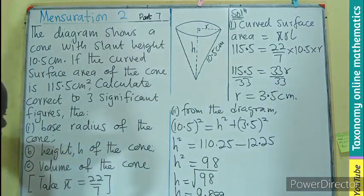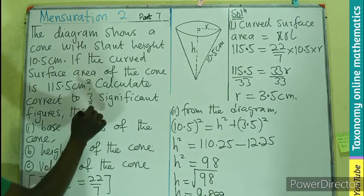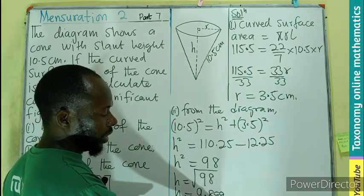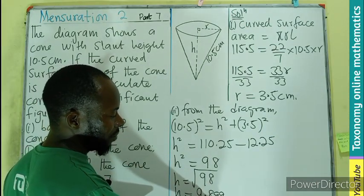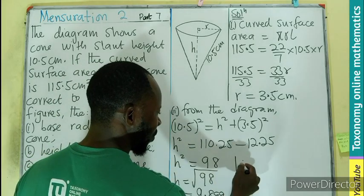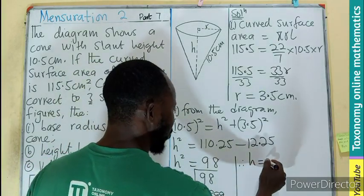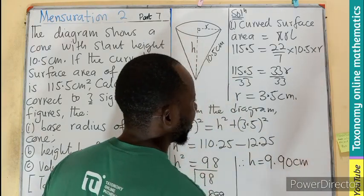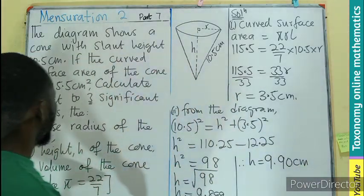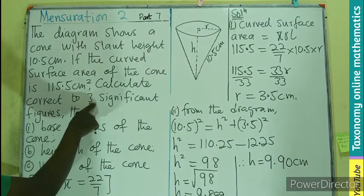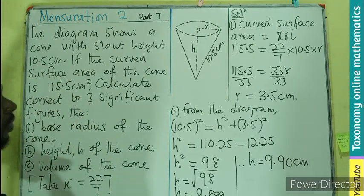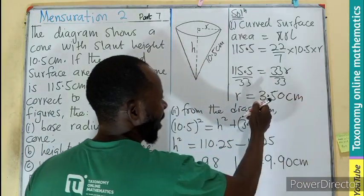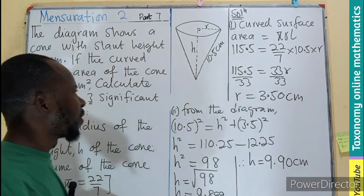But we are listening to the question for what? Three significant figures. The first one, the second one, the third. So we add one. That is making 10, so we have 9. Therefore, the height is going to be 9.90 cm. Three significant figures for all of them, so the radius will also be 3.50 cm, to make it three significant figures.